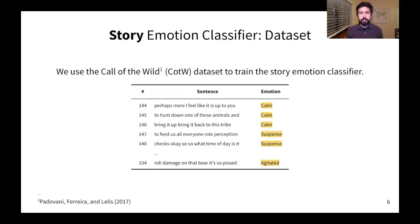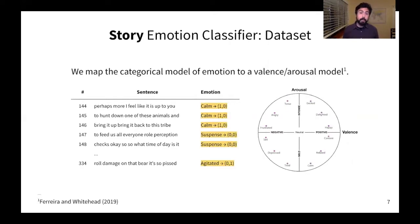Let me start talking about the dataset we used to train our story emotion classifier. Basically, the dataset is the same. It's called the Call of the Wild, and it's organized as an ordered sequence of sentences labeled according to a model of emotion. The difference now is that we map our previous categorical model of emotion into a valence and arousal model. So, for example, the label CALM is now represented as the pair 1-0. This means that CALM has values of valence 1 and arousal 0.